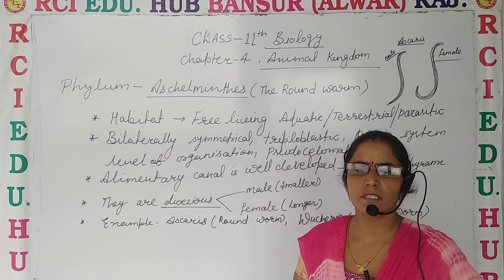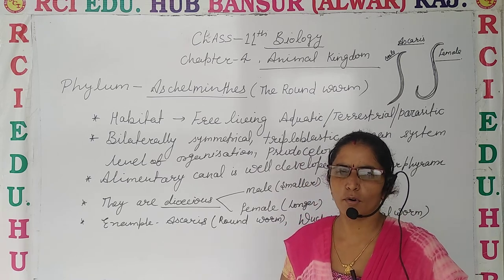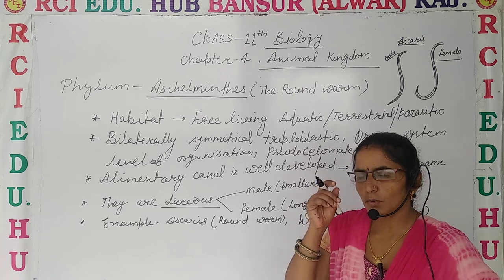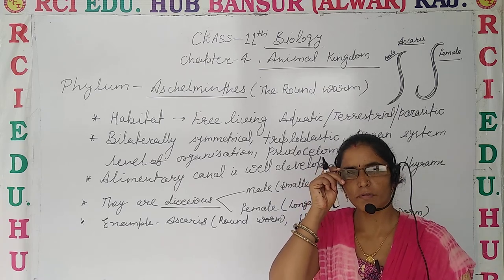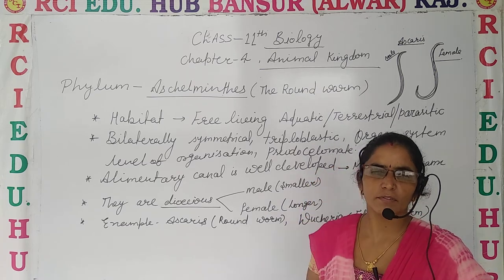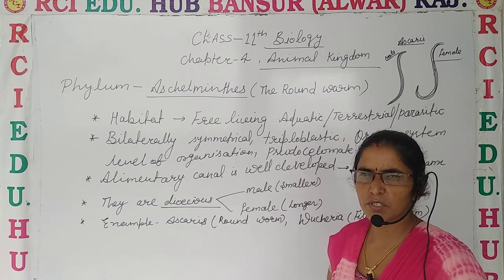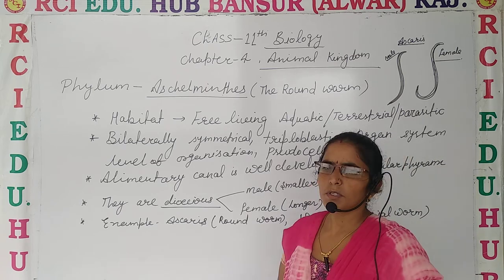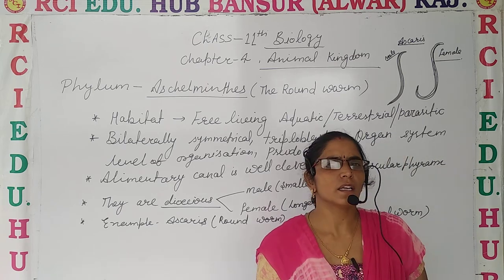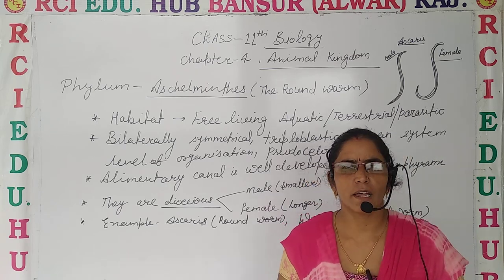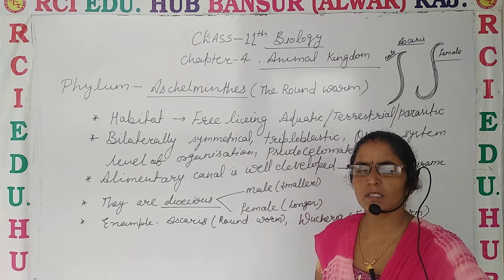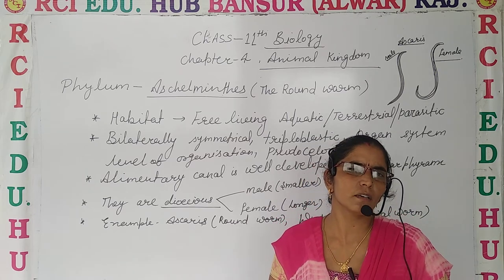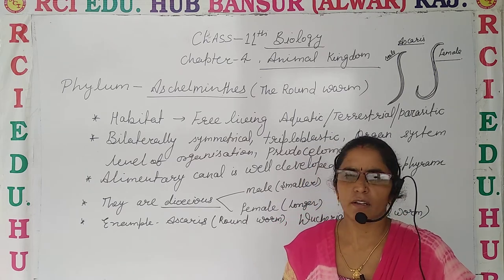The common name of Aschelminthes is the Roundworm. Let's get started with some popular and common features. First of all, we talk about Habitat — it means the type of environment or climate in which they can survive.